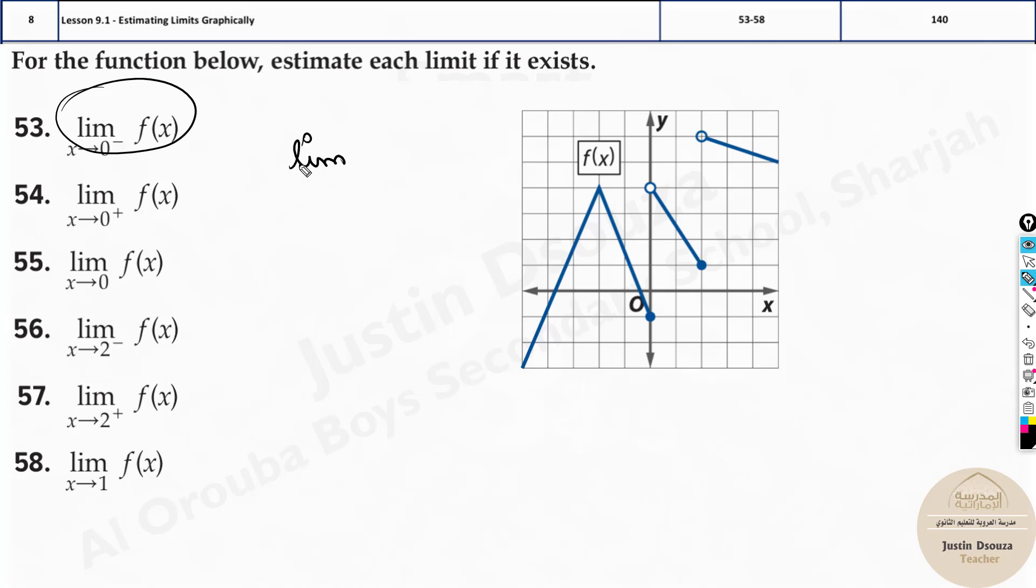If we have limit x approaches or tends to, you can use anything, x tends to 0 or approaches 0, f of x. I've not written the sign, I'll write it in a minute. What does this mean? Limit is, this is the given function f of x graph.